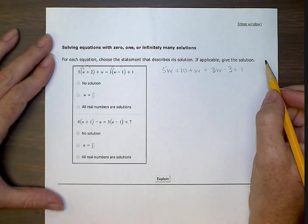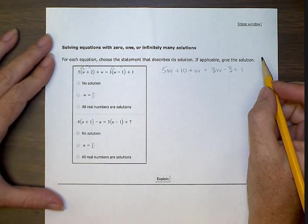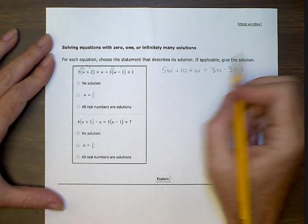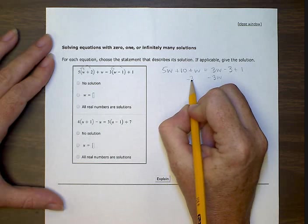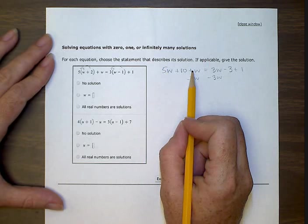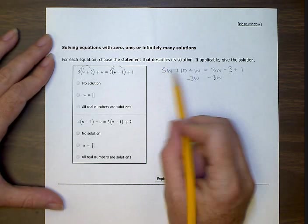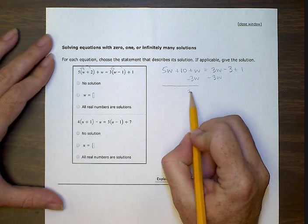Okay, so now we're going to combine like terms. So I want to have all the w's on one side, so I'm going to move this over to this side. And now I have 5w + 1w - 3w. So let's do five, six, six subtract three gives us 3w. And then we still have this ten.